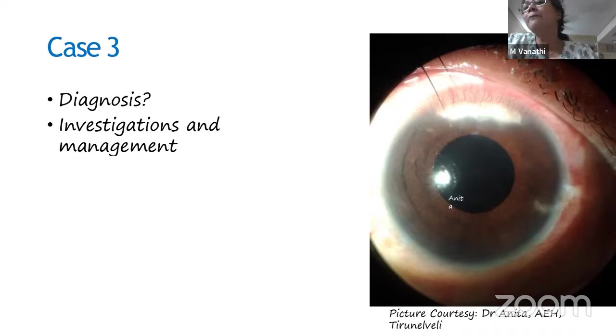Take-home message: when seeing your post-cataract patients, don't just examine the central and paracentral cornea. Always lift up the lids and examine the wound region, especially for superior incisions. Most surgeons have moved to temporal clear corneal incisions for phaco, but several SICS surgeons still prefer superior sclerocorneal tunnels. Nocardia, atypical mycobacteria, Staphylococcus, Streptococcus, and Pseudomonas are all potential causative organisms. Pseudomonas is more fulminant and rapidly progressing, unlike the indolent picture seen here.